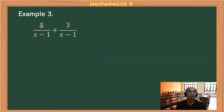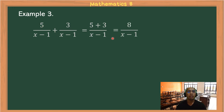Example 3: 5/(x−1) + 3/(x−1). They have the same denominator, so we copy the denominator (x−1) and add the numerators: 5 + 3 = 8. The answer is 8/(x−1).